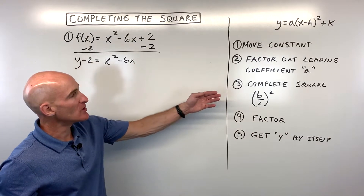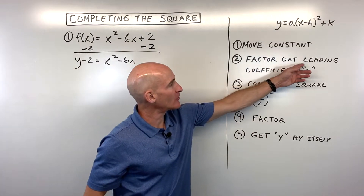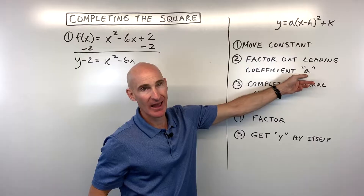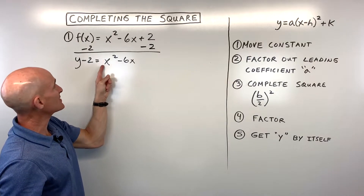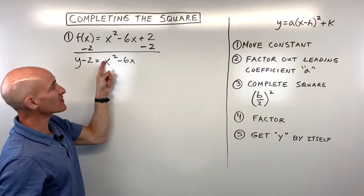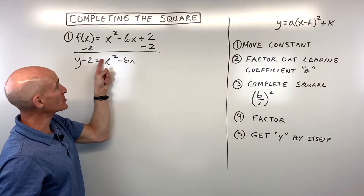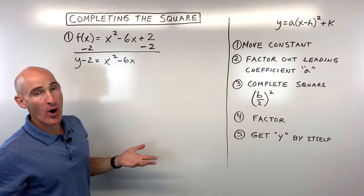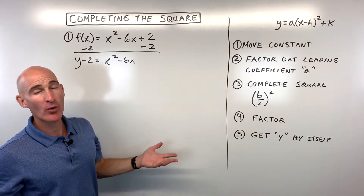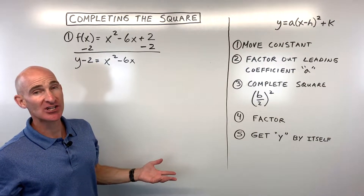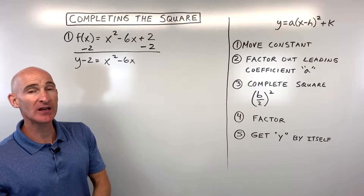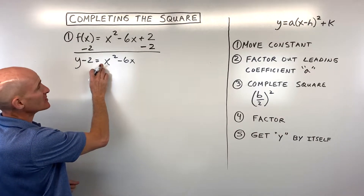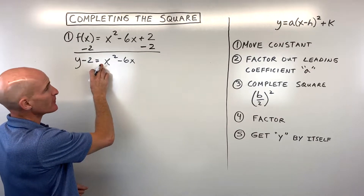Now you want to factor out the leading coefficient, a — the number that comes in front of the x squared term. In this case it's a one, so factoring out a one isn't really going to change anything. But if it was a two or a three, we'd want to make sure we factor out just the leading coefficient.